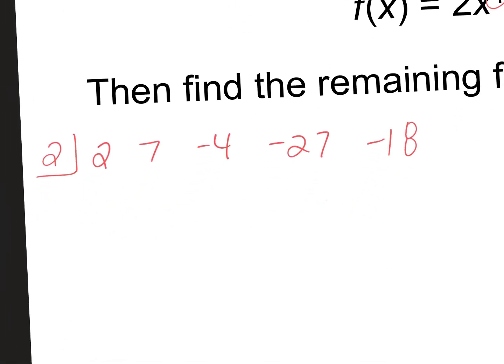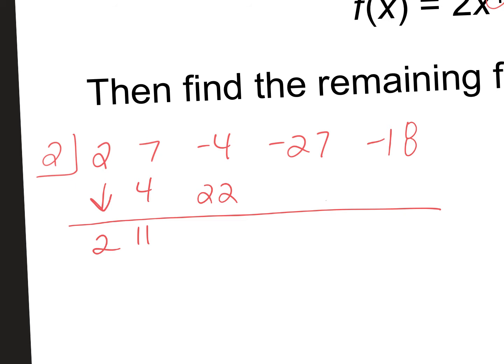Now we write out our coefficients. Can you guys read them to me? Two, seven, negative four, negative 27, negative 18. Are there any gaps? No. So everything goes x to the fourth, x cubed, x squared, x, and a constant. We're going to bring down our first term and synthetically divide. 2 times 2 is 4. 7 and 4 is 11. 11 times 2 is 22. Negative 4 and 22 is 18. 18 times 2 is 36. Negative 27 and 36 is 9. 9 times 2 is 18. 18 and negative 18 is zero!